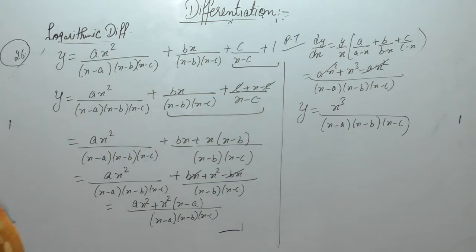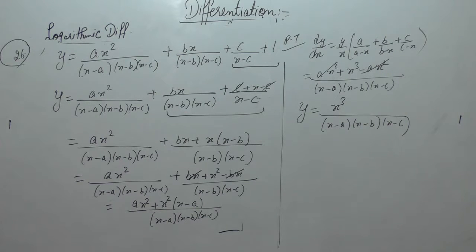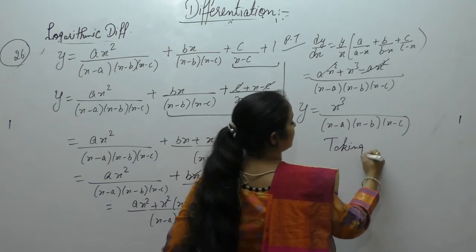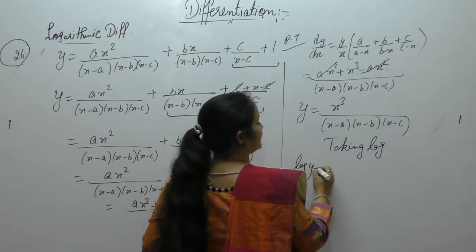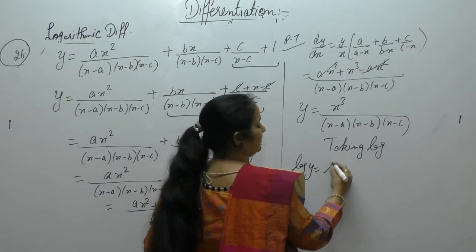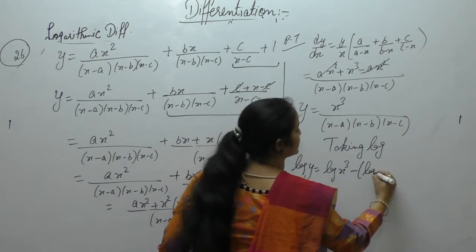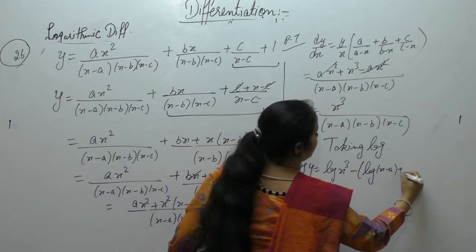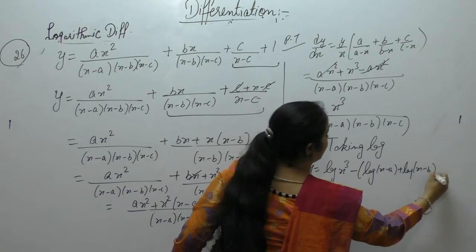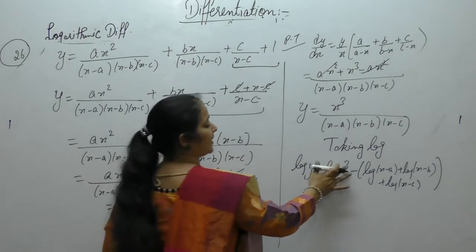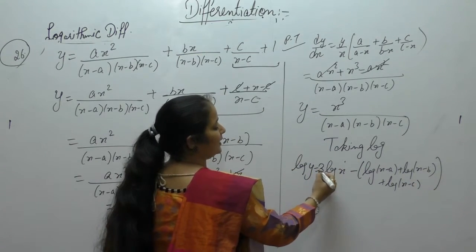Now differentiate. We have to take the log here, so take log on both sides. Taking log of y: this is of the form log(a/b) = log a - log b. But here there are three terms, so we can write log a + log b + log c. Log of x³ can be written as 3·log x.